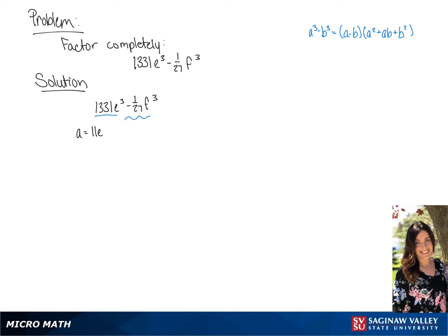Our b value is the cubed root of 1/27th f cubed, which is going to be 1/3rd f. Now we are going to plug these terms into our equation in the top right hand corner. We will get 11e minus 1/3rd f, times 121e squared plus 11/3 ef plus 1/9 f squared.